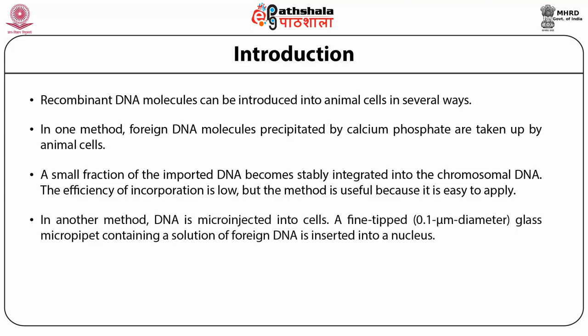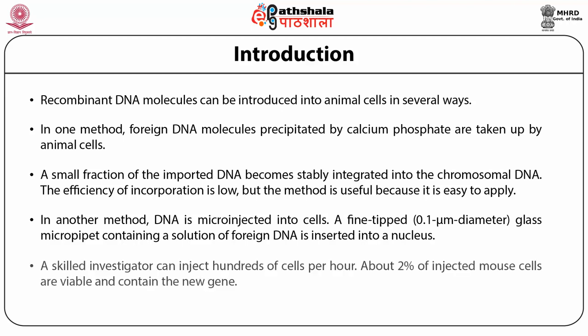In another method, DNA is microinjected into cells. A fine glass microtip of 0.1 micrometer in diameter containing a solution of foreign DNA can be inserted into a nucleus. A skilled investigator can inject hundreds of cells per hour. About 2% of injected mouse cells are viable and contain the new gene.